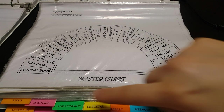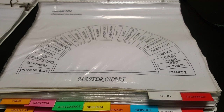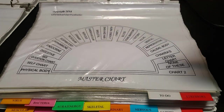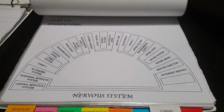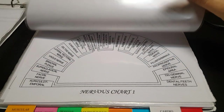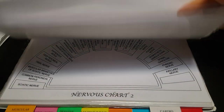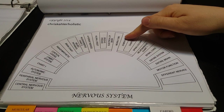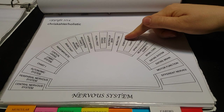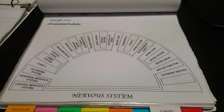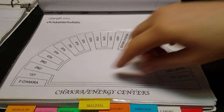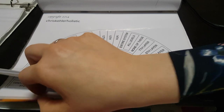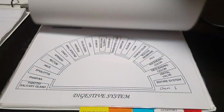Each area has its own chart listed, so if my pendulum swings to the nervous system on the master chart, I simply go to the nervous system chart and douse to find out where the problem is within your nervous system. For example, if you suffer from anxiety, my pendulum would swing most likely to the sympathetic area of your nervous system, and then I clear the problem from there. Every physical area of the body is listed and further broken down.